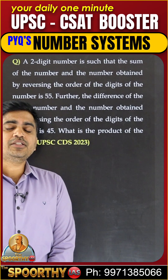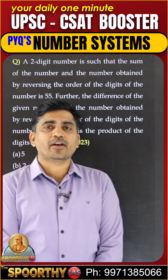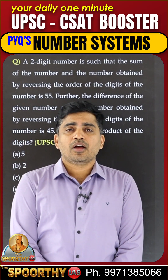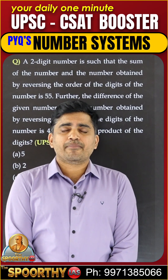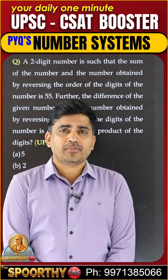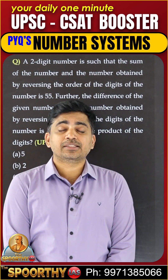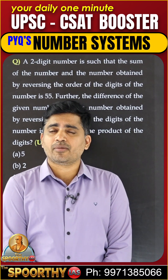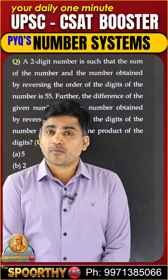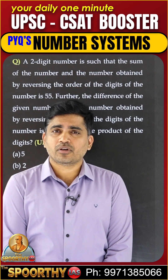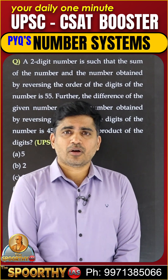Hi everyone. This is one of the important concepts in number systems. For a 2D number and its reverse number, the sum is equal to a multiple of 11, whereas the difference is equal to a multiple of 9.